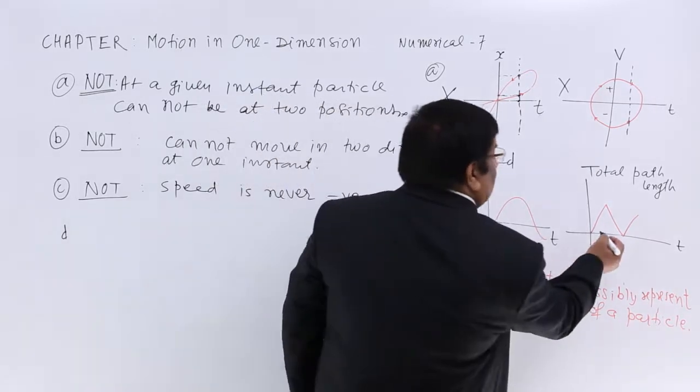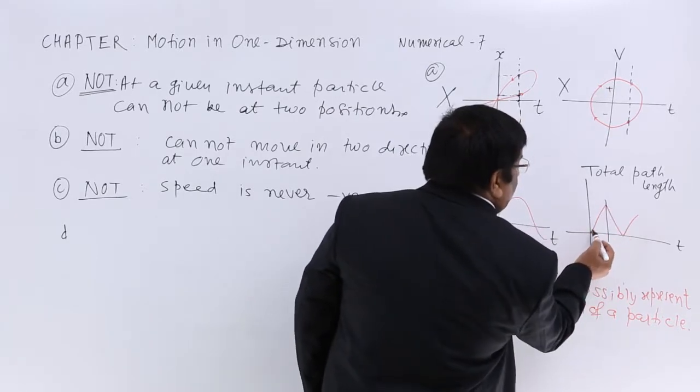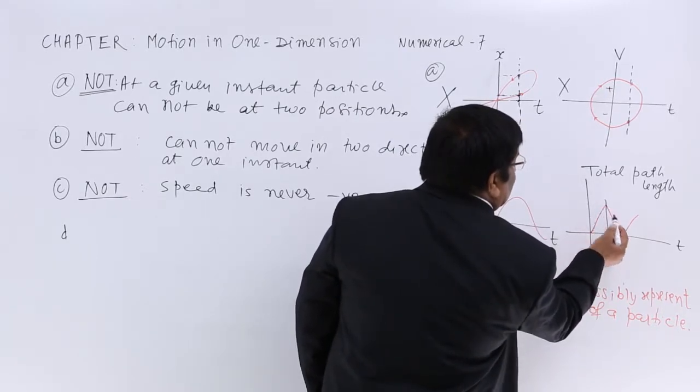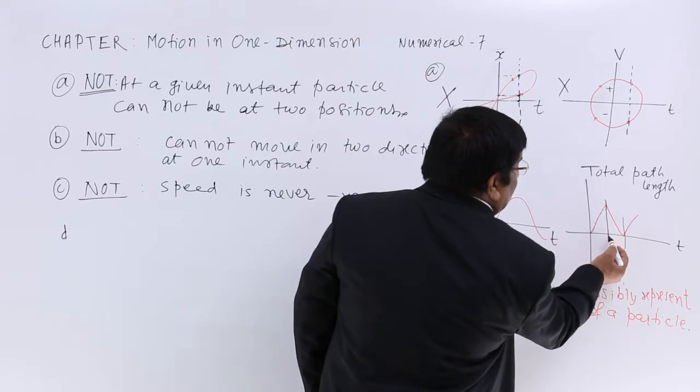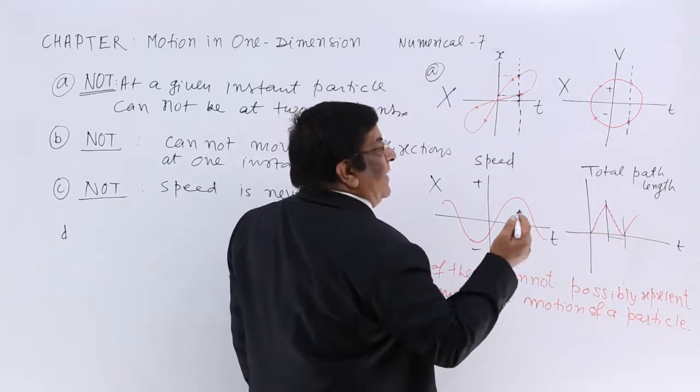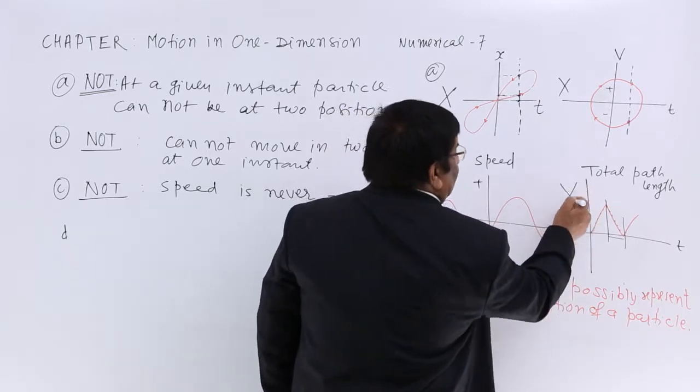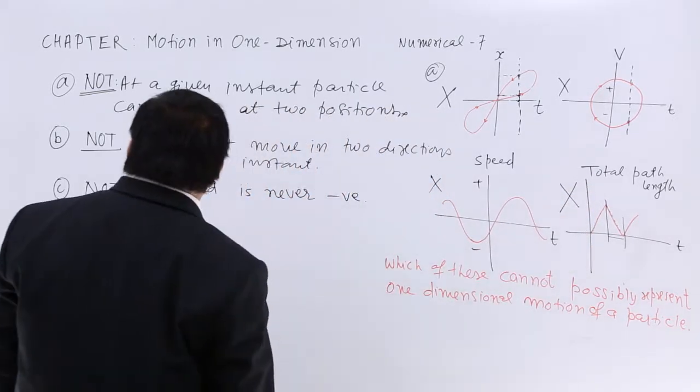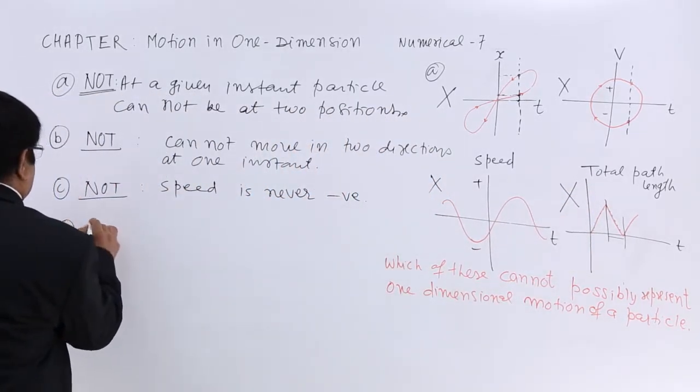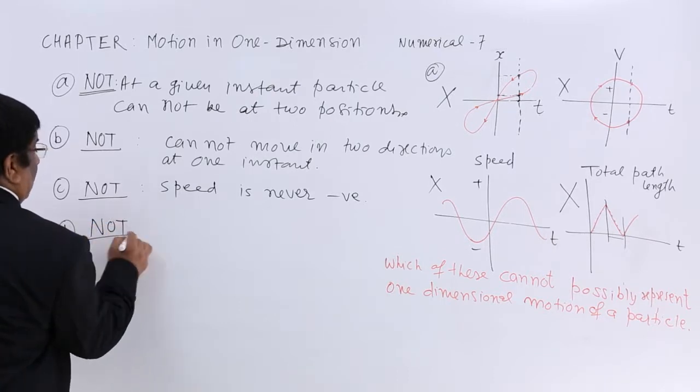And here, what is given? Up to this, it is okay. Path length goes on increasing. But in this time period, the path length is decreasing, which is not possible. Path length never decreases. So, not possible.